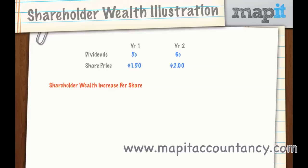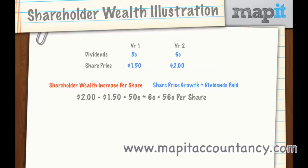So here we have share price growth plus dividends paid. We can't do it for year one because we don't have the year zero share price. But in year two, the share price is $2.00; in year one it was $1.50, so the increase in share price is 50 cents. The dividend paid in year two is 6 cents. So 50 cents plus 6 cents gives us 56 cents per share — that's the increase in shareholder wealth per share.